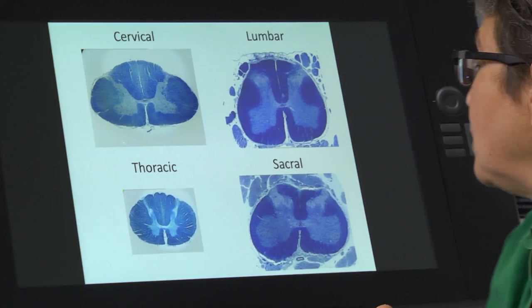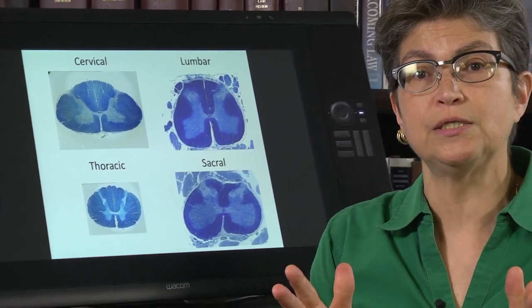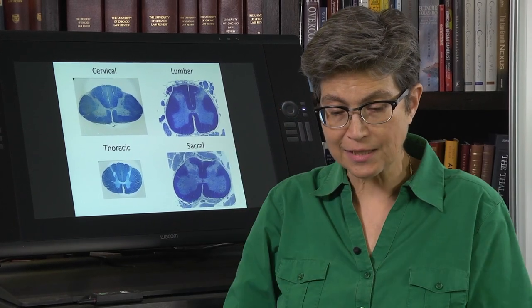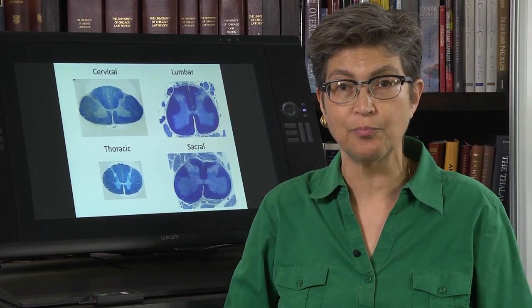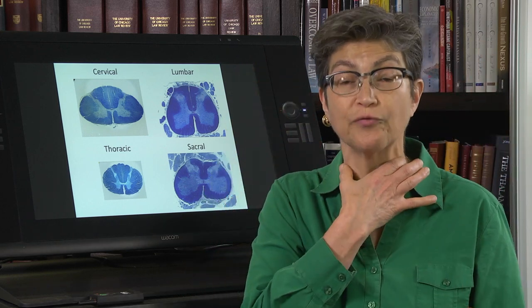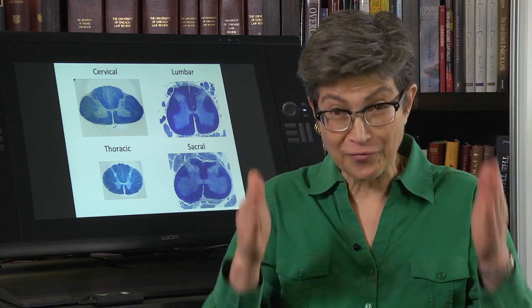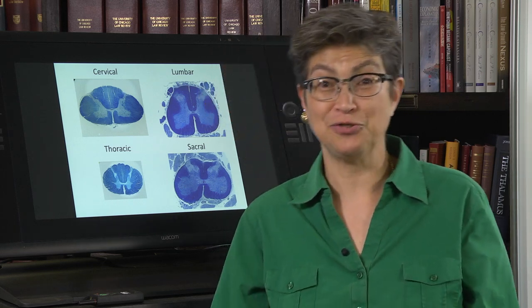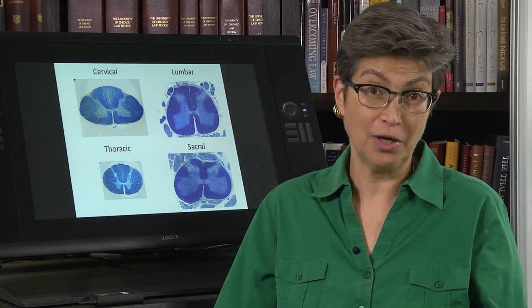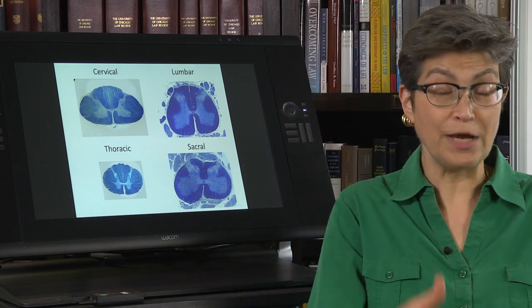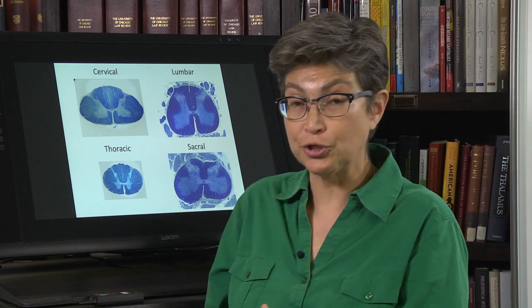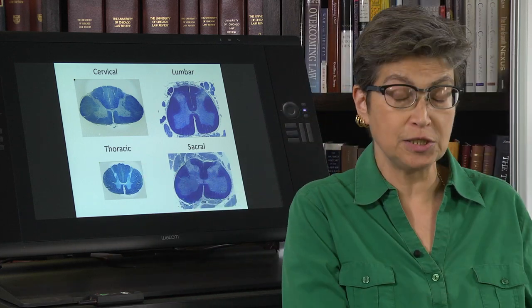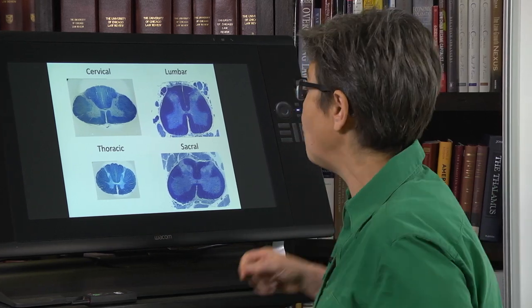The next thing that we can use is the amount of white matter. So everything has to come down from the brain or go up to the brain through the cervical cord. So all the fibers pass through the cervical cord. But only a minority of them pass through the sacral cord. So the white to gray matter ratio is largest in the cervical cord and smallest, and it gets progressively smaller, and it's smallest in the sacral cord. And we can see that.